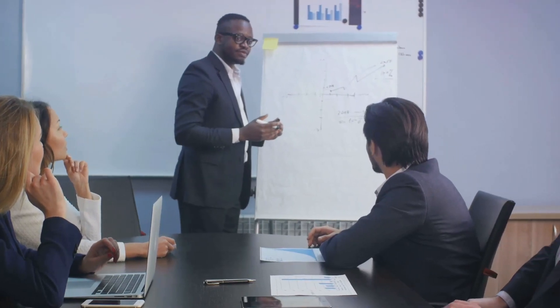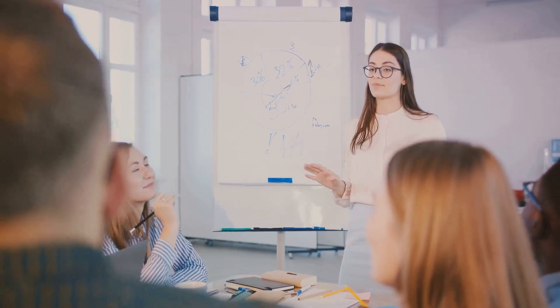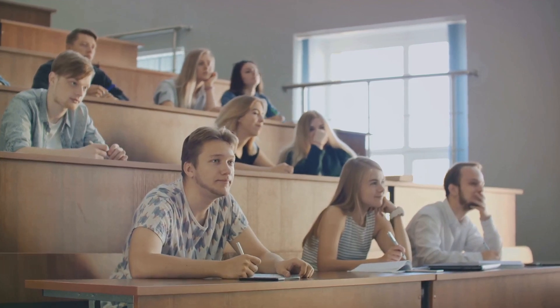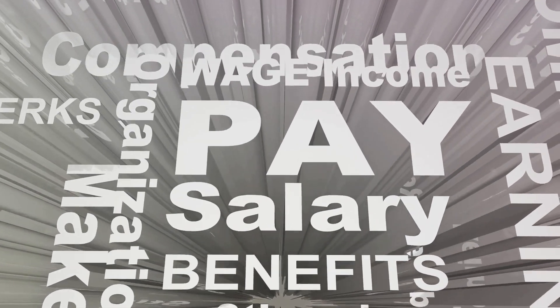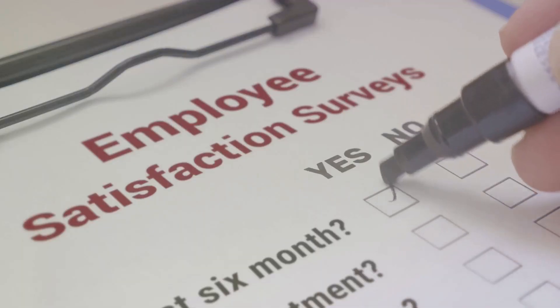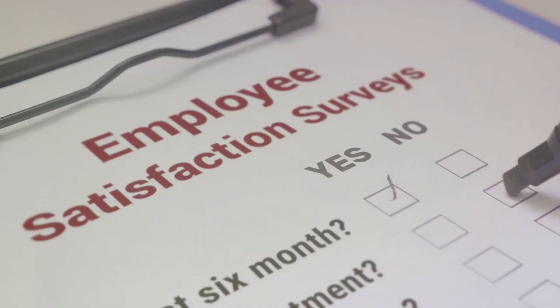Adequately. Part of speech: adverb. Meanings: in a manner that is sufficient or satisfactory in quantity or quality. Example: the instructions were adequately explained so everyone understood. To the degree or extent that is sufficient or appropriate. Example: she was adequately compensated for her time and effort.